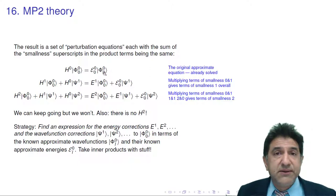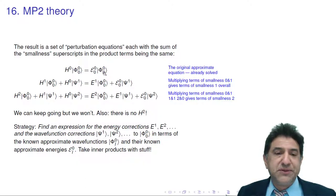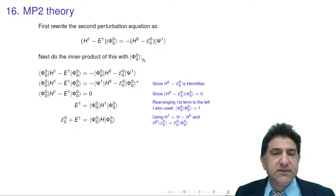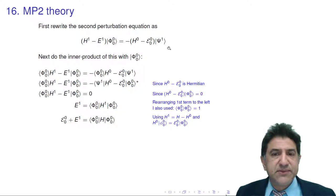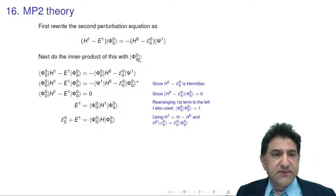How do we make progress? We've been dealing a lot with vectors, and all we've ever done is take inner products — and that's exactly what we're going to do. We rewrite the second equation, which is the first one containing the unknowns E1 and ψ¹, and take the inner product with φ⁰₀, since we know what φ⁰₀ is.